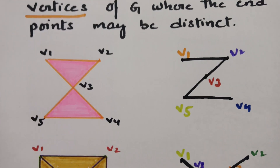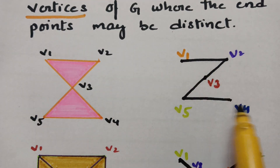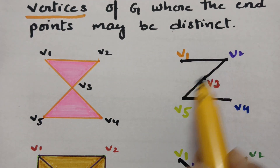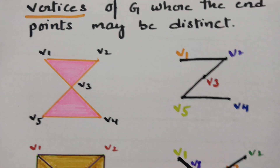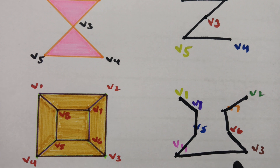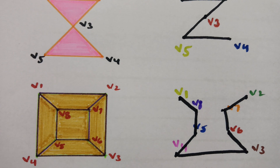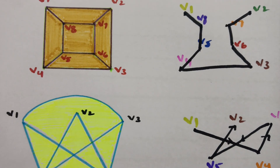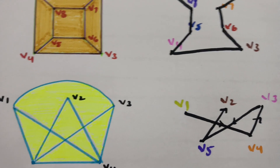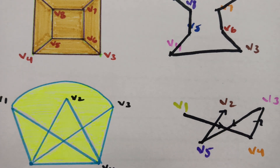There are five vertices and I have crossed each and every vertex exactly once. And in the previous example, there are eight vertices where each vertex was crossed only once. In this example with five vertices, I have crossed each and every vertex only once — and this is nothing but the Hamiltonian path.